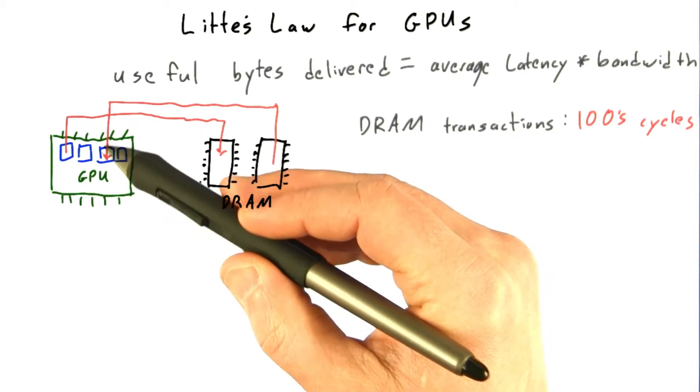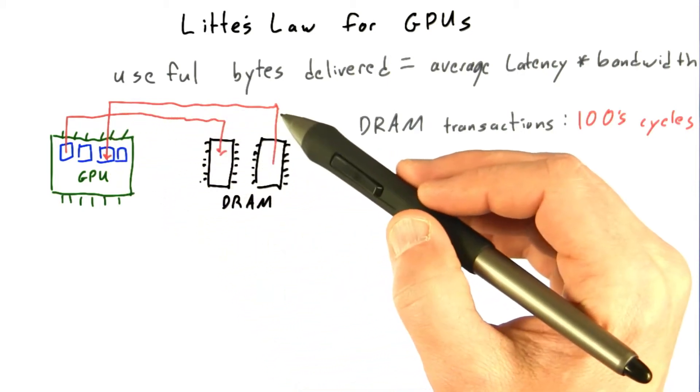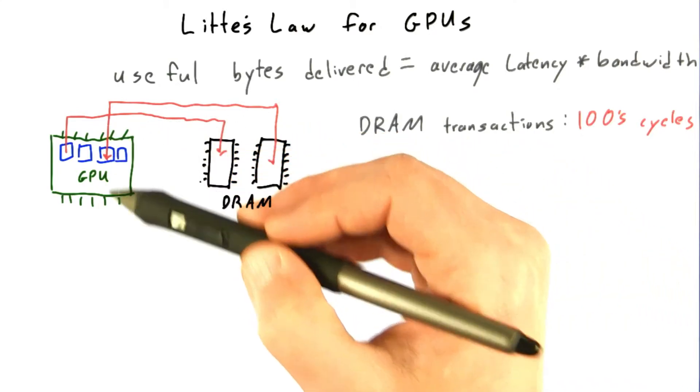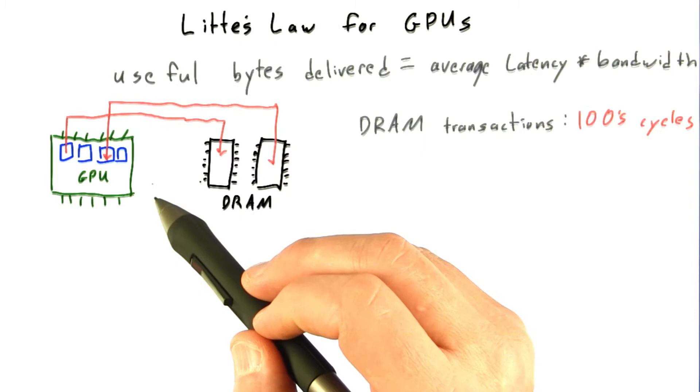So to go from somewhere inside the GPU, off the chip, over a wire somewhere on the board, into the DRAM, get a result, go all the way back, hundreds and hundreds of clock cycles, many nanoseconds.